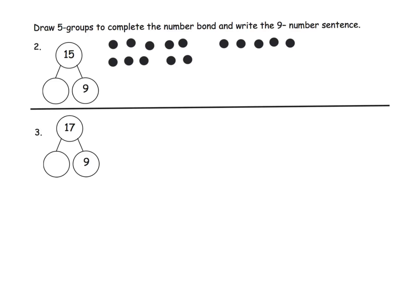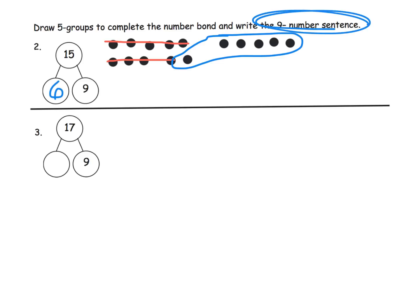We've drawn the five groups to complete the number bond. Now, we know we have 15 total and we already have 9, so we're going to subtract 9 — cross off 5, then cross off 4 more. Now we can see the answer is the original 5 plus one more, so the answer is 6. Our missing number is 6, and the number sentence is 15 minus 9 equals 6. If students want to write 9 plus 6 equals 15, that's fine too, since they're in the same family — but here we're looking for the subtraction sentence.